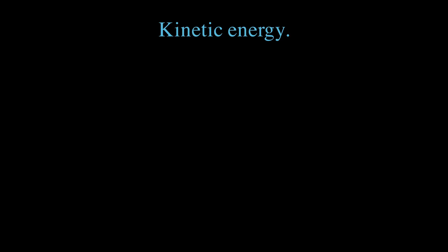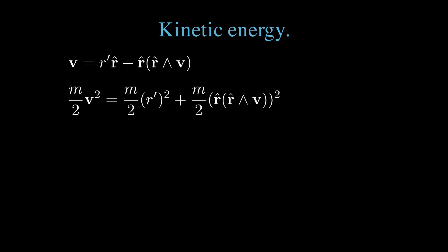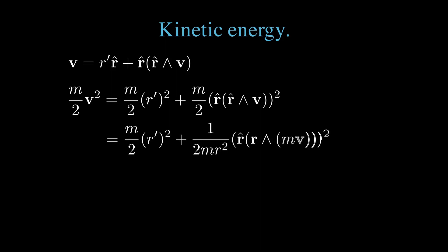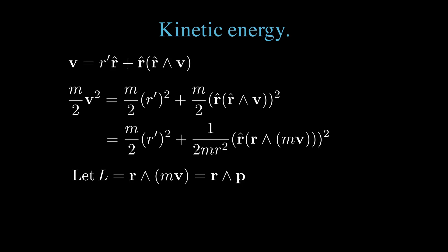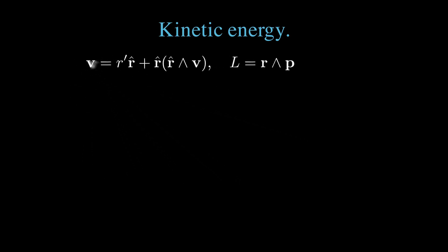As an application of these results, let's compute the kinetic energy of a particle with mass m. We found that our velocity is r prime r̂ plus r̂ times the wedge of r̂ with v. Since r̂ and r̂ prime are perpendicular, we can compute velocity squared by squaring each term independently. The energy equals m v squared over 2, which is m over 2 of r prime squared plus m over 2 of r̂ times the wedge of r̂ with v, all squared. Inserting a factor of r squared and changing one r̂ into r, we write the angular momentum as the bivector l equals r wedged with mv, or r wedged with p. We can now write our energy in terms of l.